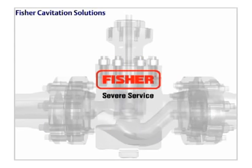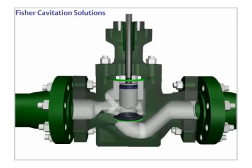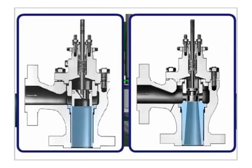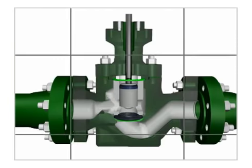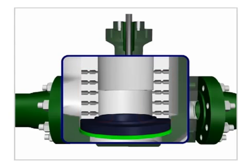Cavitation damage can often be reduced or prevented by using the proper components. Emerson offers these solutions. Valve liners are constructed of hardened materials to protect the valve body. Pressure staging keeps the pressure from falling to near a liquid's vapor pressure, which helps prevent vapor bubbles from forming.